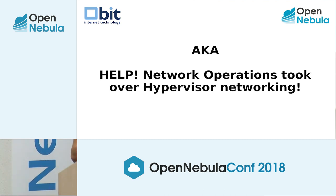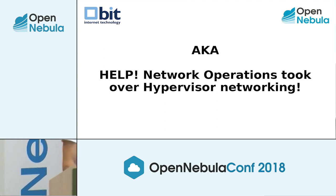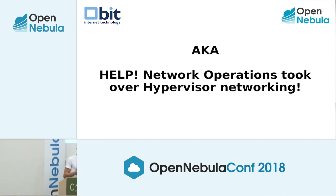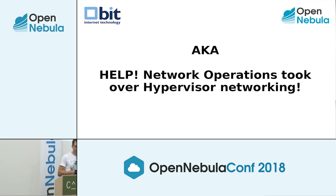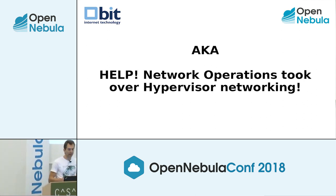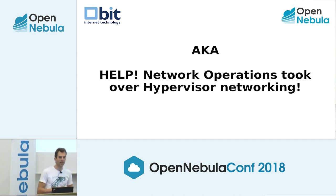Welcome. I'm going to talk about scalable layer two overlay networks with router 3XLAN and multi-purpose BGP over eVPN. That's a whole mouthful. It actually should have been called 'Help, Network Operations Took Over Hypervisor Networking.' Basically what I'm going to tell you is the work my networking colleagues have done to our hypervisors. We were running OpenVSwitch, tagged VLANs and all that kind of stuff, until they decided to push it further south to our hypervisors.